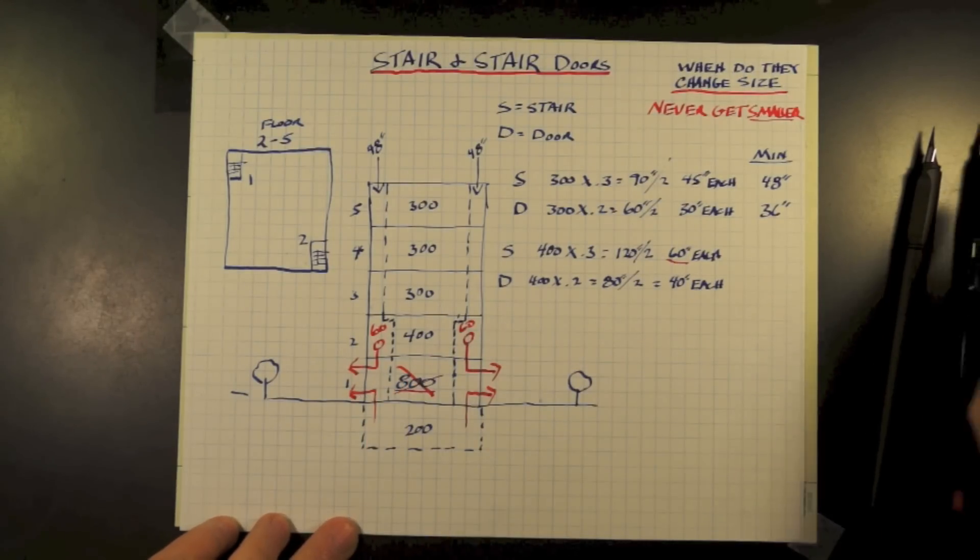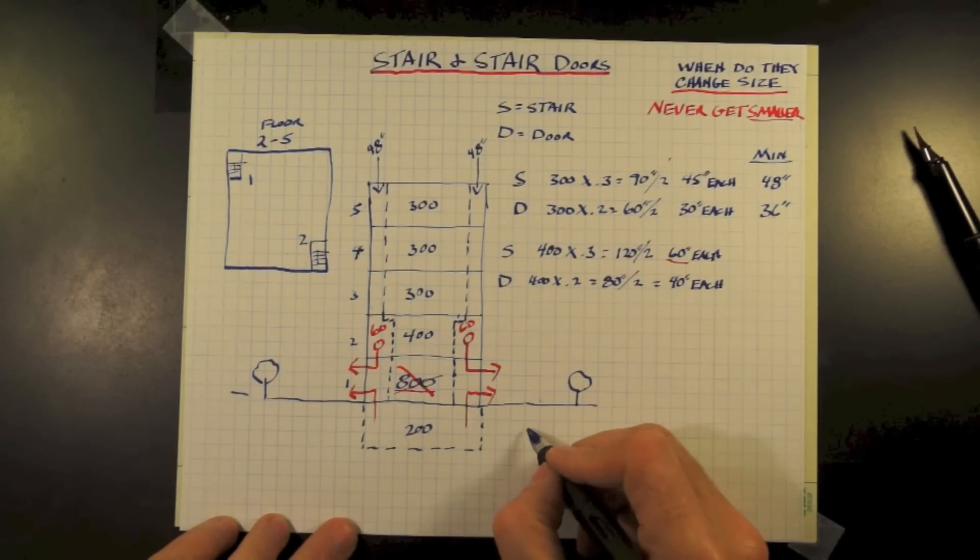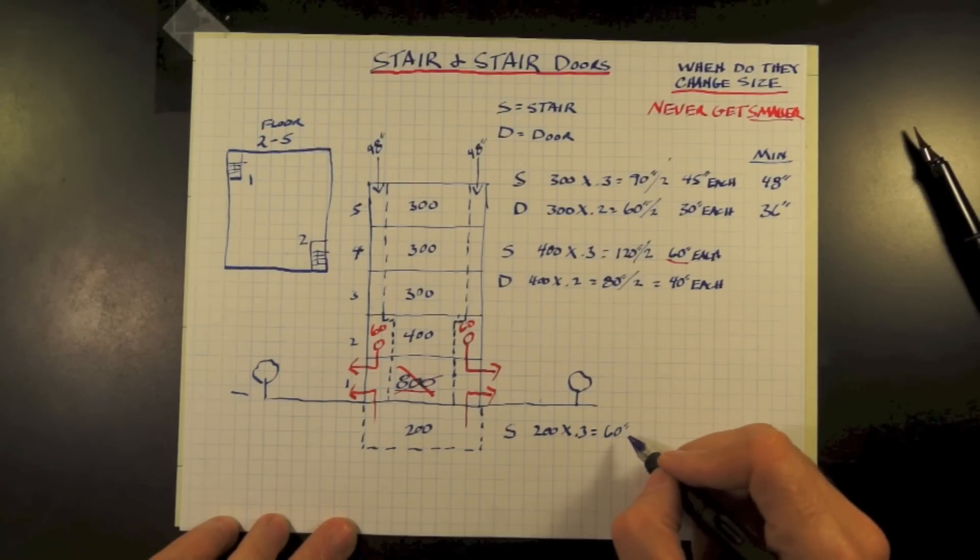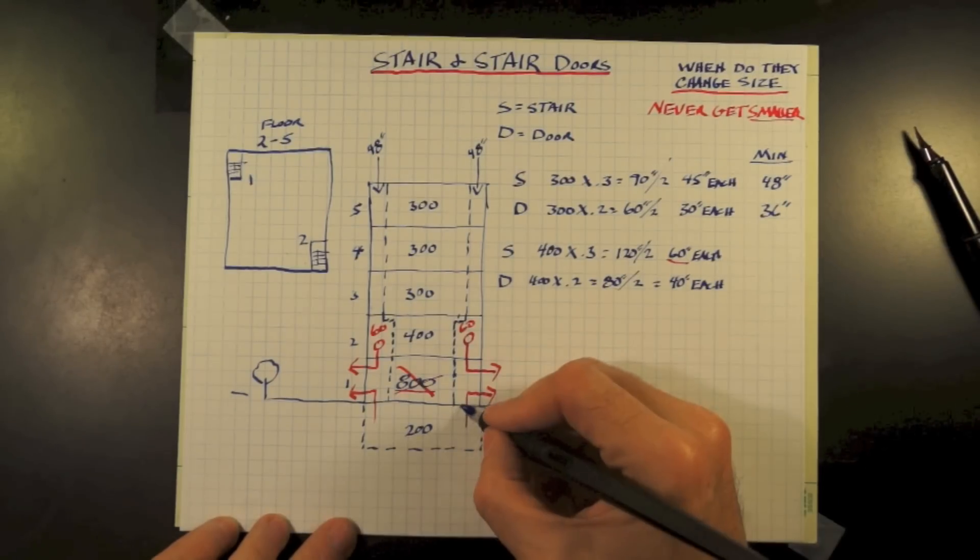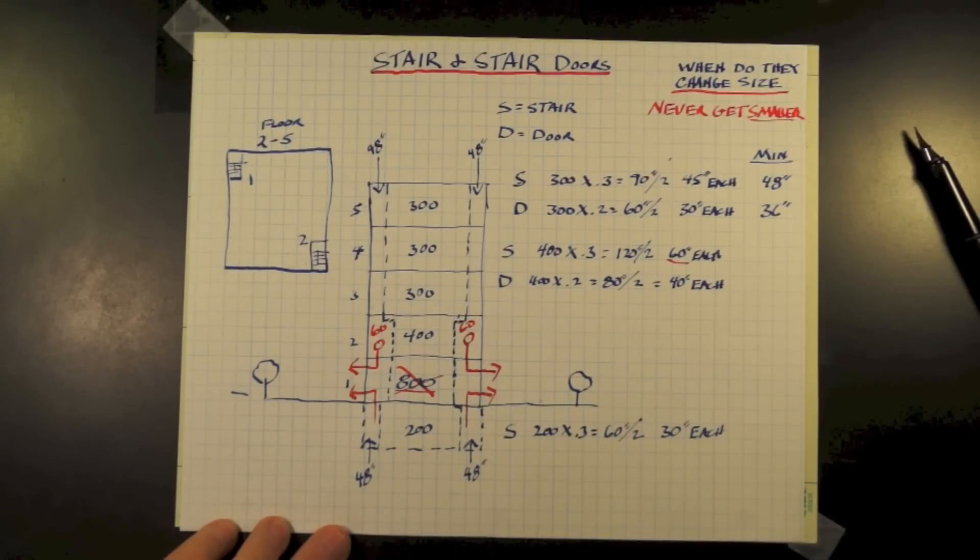When we exit, we exit up and out with our stairs typically being aligned vertically. With an occupant load at the basement of 200, our stair times 0.3 equals 60 inches divided by two stairs equals 30 inches each. With a minimum requirement of 48 inches for a width of our stair, we are in compliance at 48.